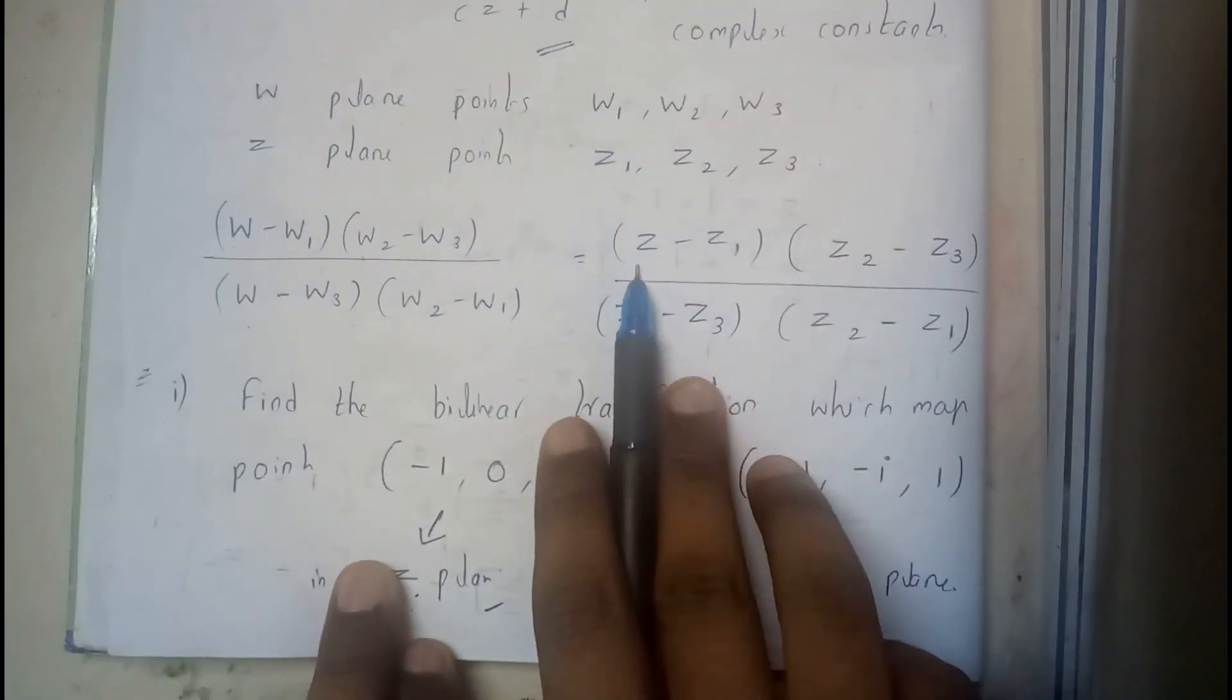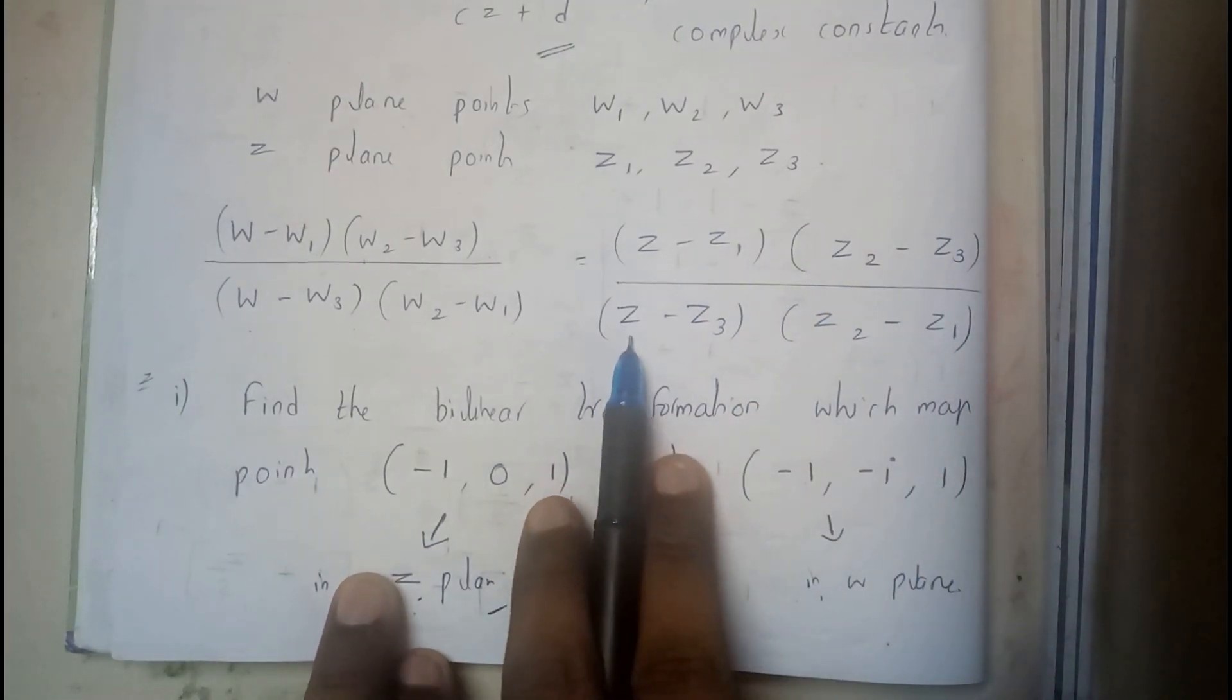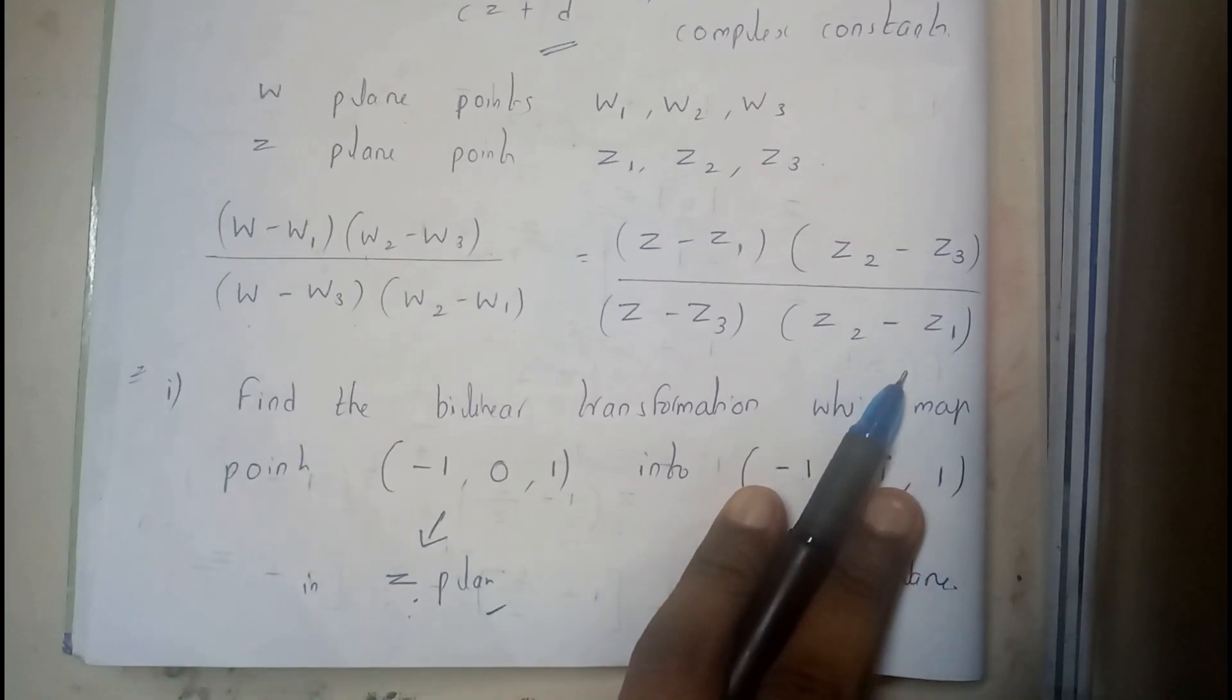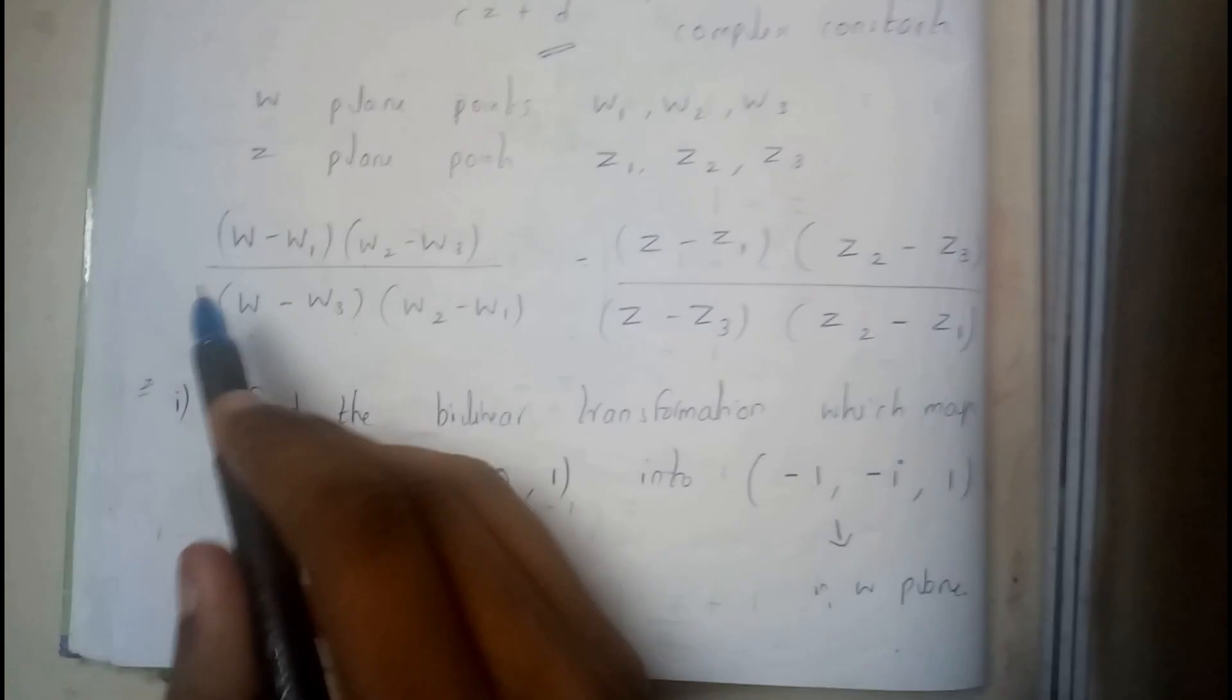equals (z - z1)(z2 - z3) by (z - z3)(z2 - z1). So this is the formula. At the end you will be finding the value of w.